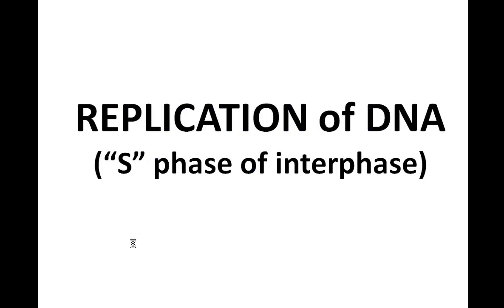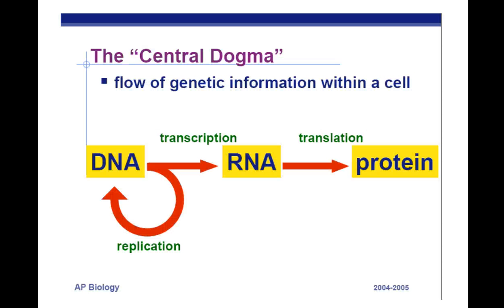Replication of DNA happens during the S phase of interphase. Remember, interphase has G1, S, and G2. You make DNA during the S phase. You separate the chromosomes during mitosis, so replication doesn't happen during the M phase — it happens before that, during the S phase.